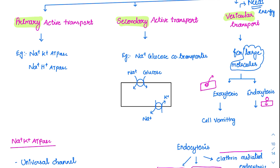Primary active transport uses its own ATP enzyme — it has its own ATPase through which it moves substances. Secondary active transporters use others' energy, like the sodium-glucose co-transporter, which transports sodium and glucose using energy provided by the sodium-potassium ATPase from the basolateral side. A simple analogy: climbing stairs on your own energy is primary active transport; taking the lift using someone else's energy is secondary active transport. Primary active transport names typically contain 'ATPase,' such as sodium-potassium ATPase or sodium-hydrogen ATPase.